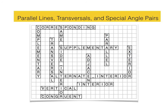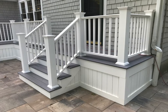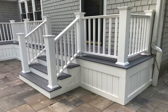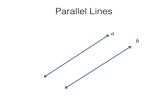What are parallel lines? You can find parallel lines everywhere — there are many parallel lines in this picture, and a lot of mathematics went into the design and construction of this beautiful deck. Parallel lines are lines that are everywhere equidistant. They have the same slope and will never intersect.